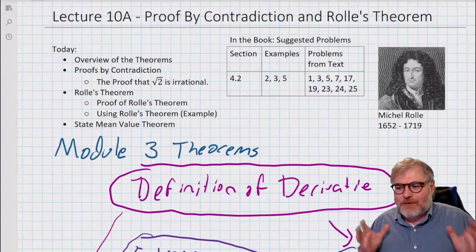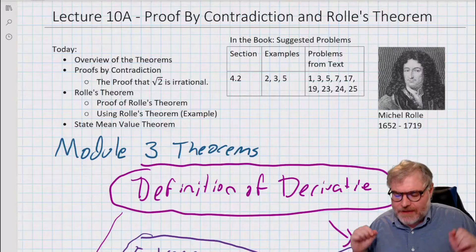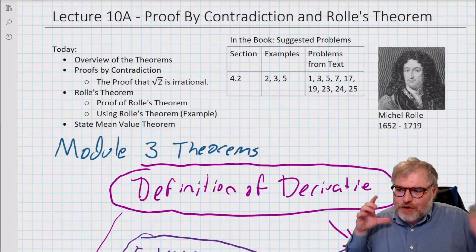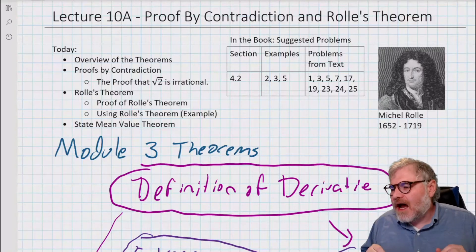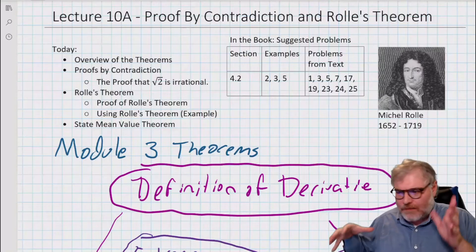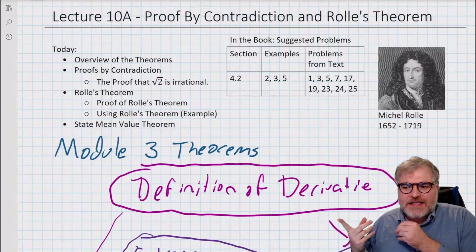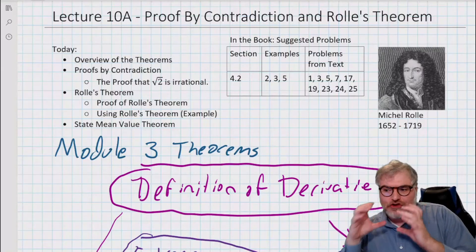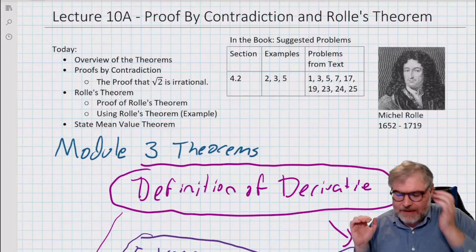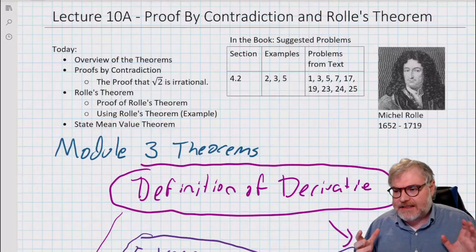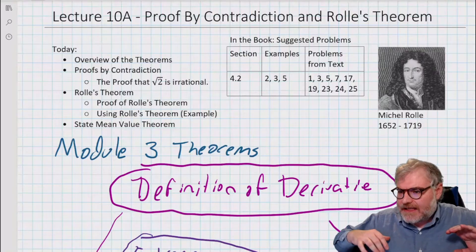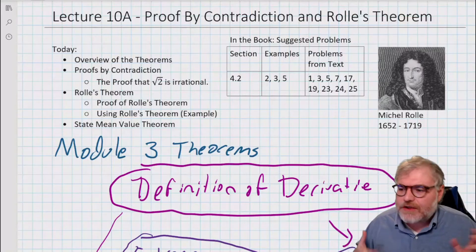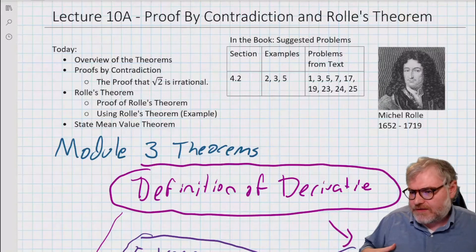Then what we're going to do is really cool — we're going to do proofs by contradiction. And we're going to do the most famous of these: the proof that the square root of 2 is irrational. This is something your book has a little blurb about, and it got cut when they went from the big book to the small book, but we're actually going to do proof by contradiction big time. Then we're going to do Rolle's theorem and prove it using contradiction, and then do some examples.